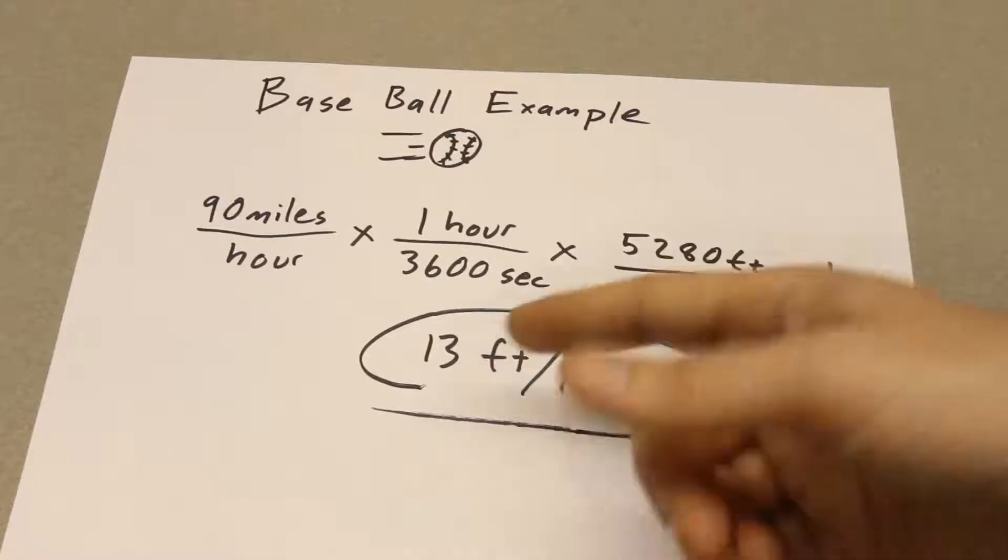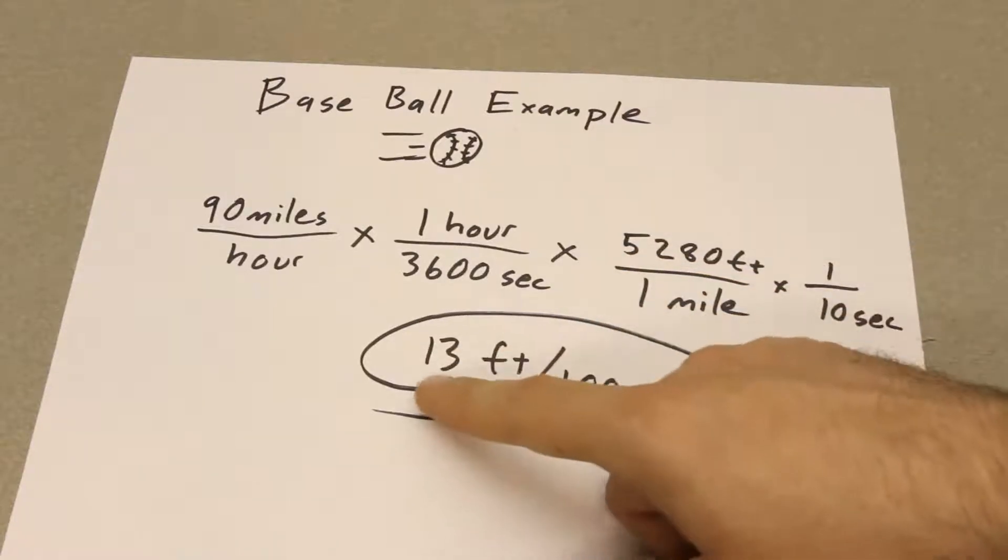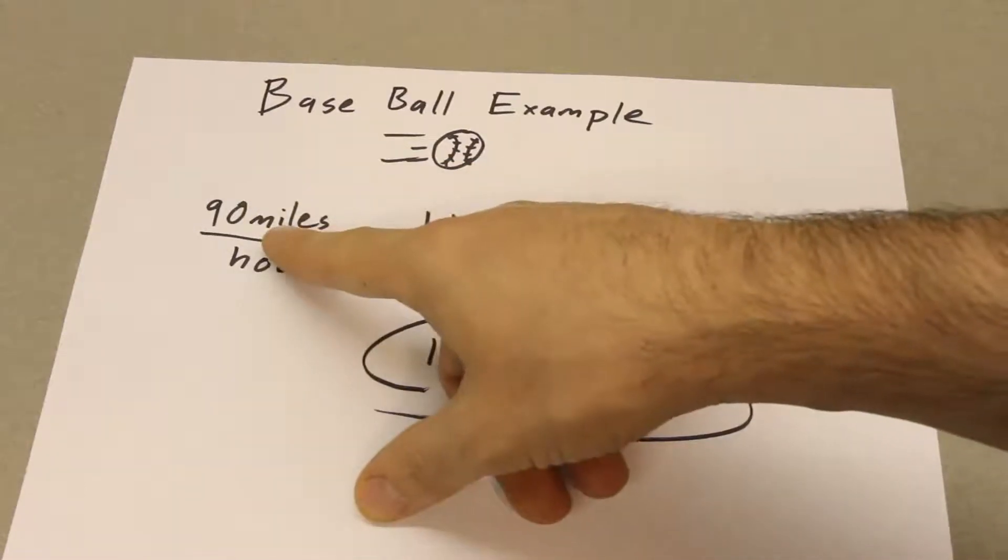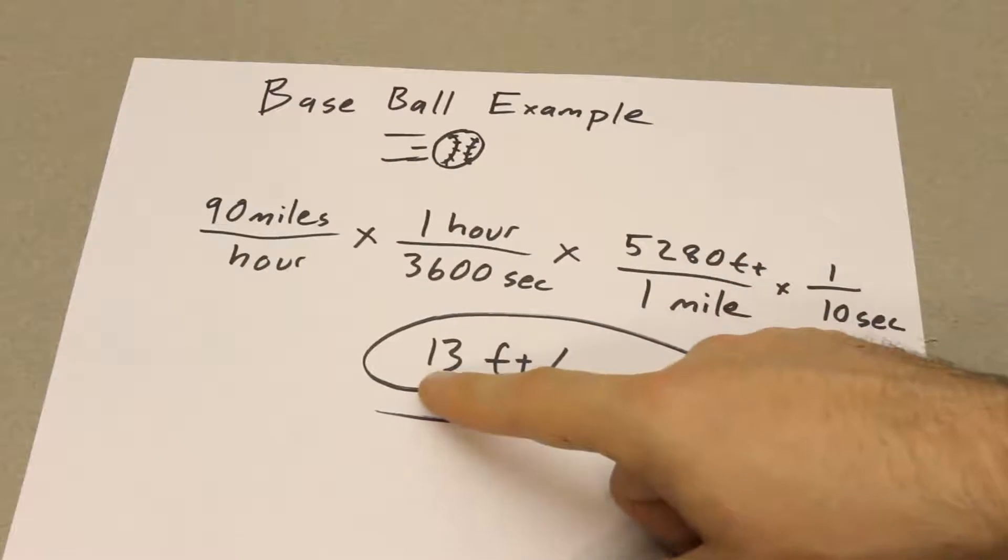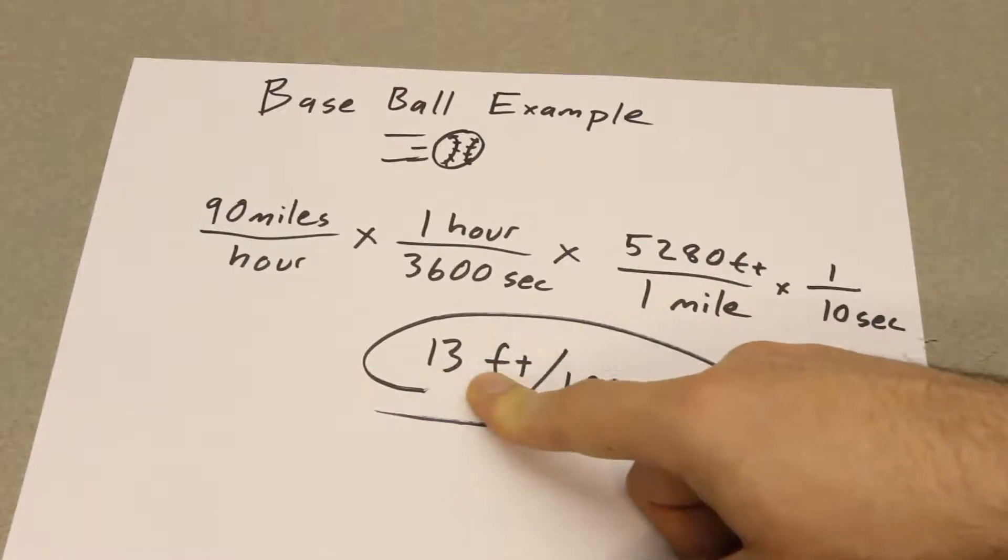And the problem gets way worse if you're photographing a bullet, right? Because a bullet's practically 10 times or more the speed of that baseball. So now you're talking about 130 feet.